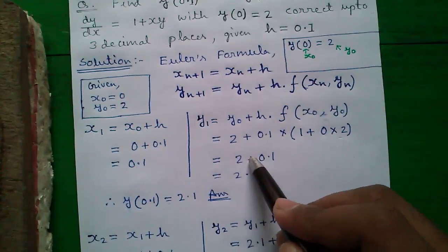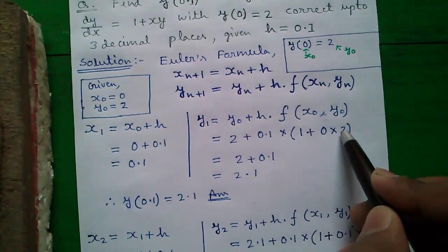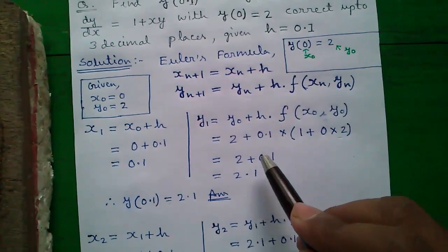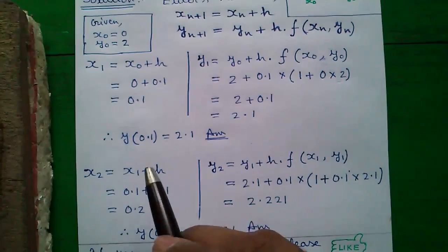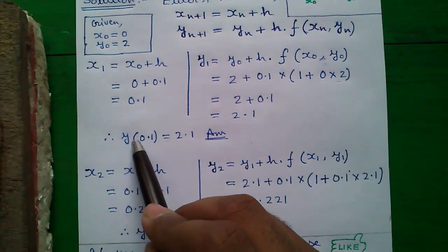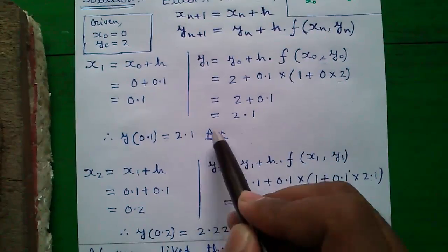That becomes 2 plus 0.1 into 0 into 2. So 0.1 into 1 that is 0.1. So 2 plus 0.1 equals to 2.1. So our first answer is y(0.1) equals to 2.1.